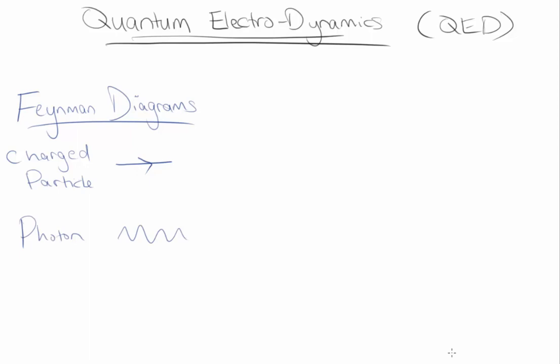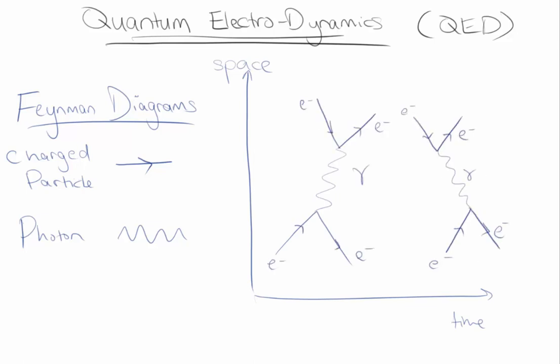We can interpret them as being space-time diagrams for different interaction processes. For example, these are two different Feynman diagrams describing electron-electron scattering events, where a photon is emitted from one electron and absorbed by the other, causing them to scatter from each other.